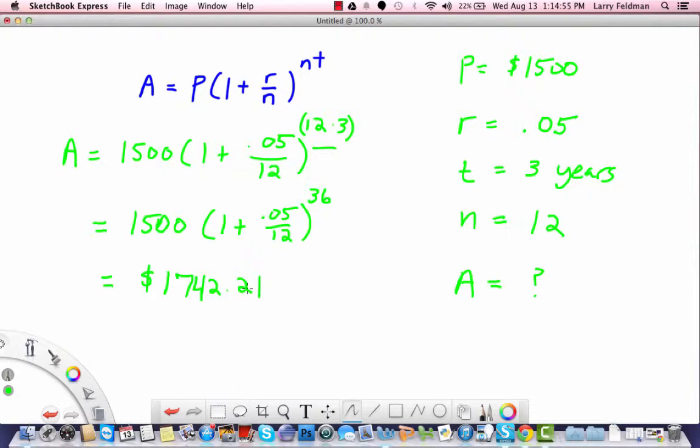Now, this is an application of the formula in a very straightforward manner where we're solving for A. But frequently, you'll want to solve for different variables such as the interest rate, the number of times interest must be compounded, the principle or time. So you can really solve for any of the variables as long as you know the other ones. So let's look at another example.